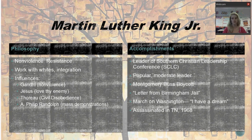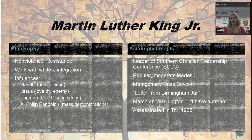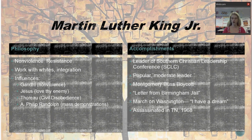He also draws influences from people more contemporary to him, namely A. Philip Randolph. We mentioned him during World War Two — he led a protest against discrimination against African Americans in the workplace. One of the things Randolph did was lead mass demonstrations, marches on Washington D.C., to show peaceful protests with a massive amount of support. You see this with Dr. King in the March on Washington.